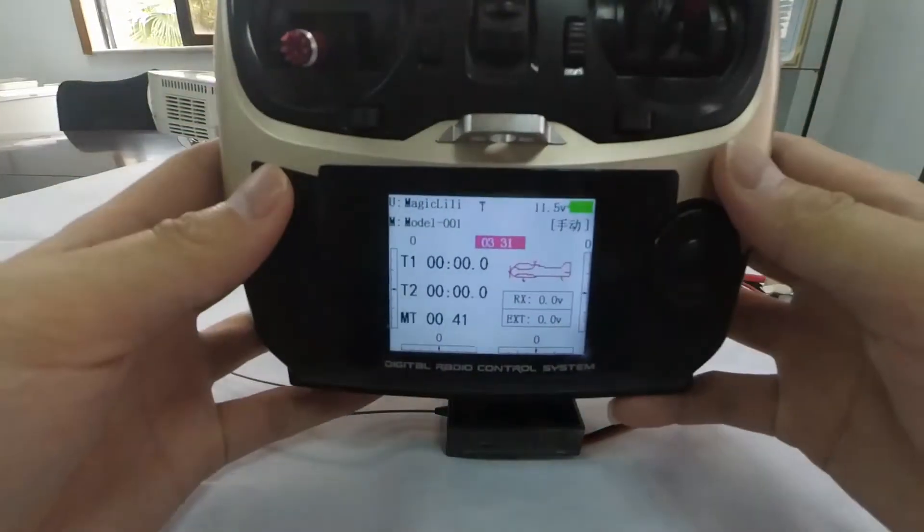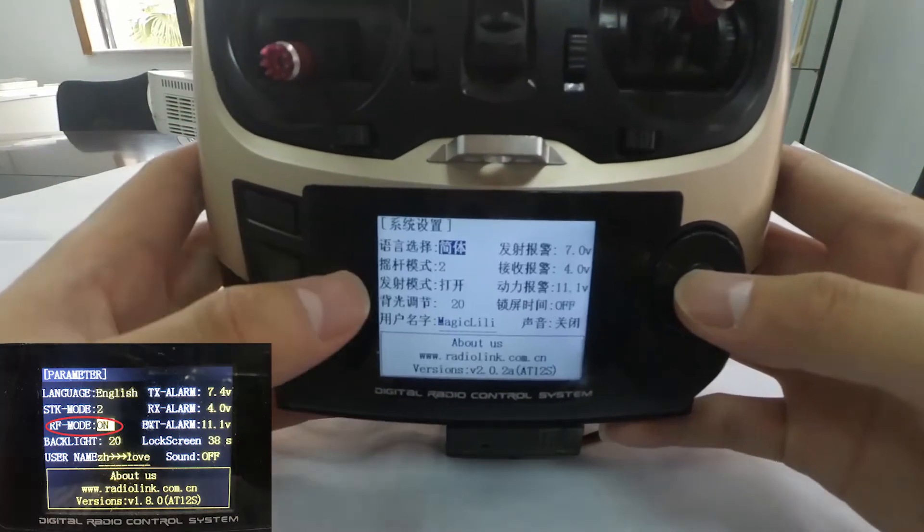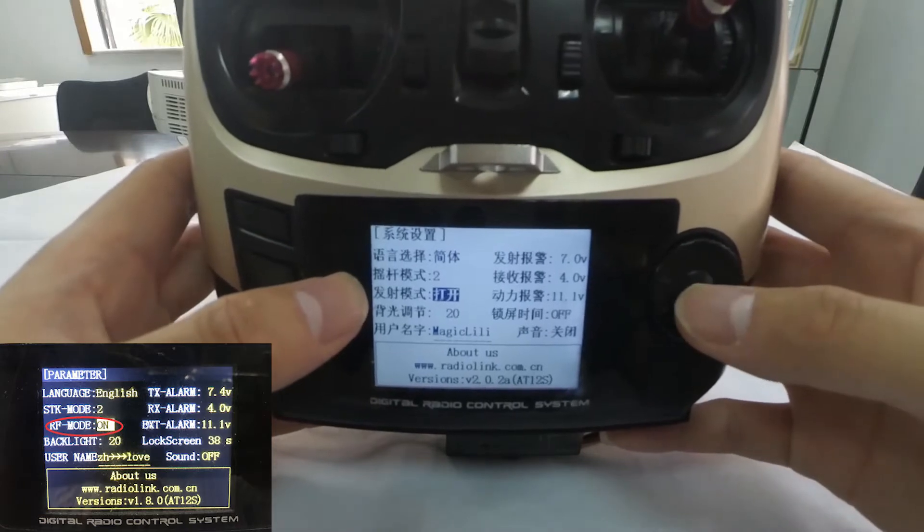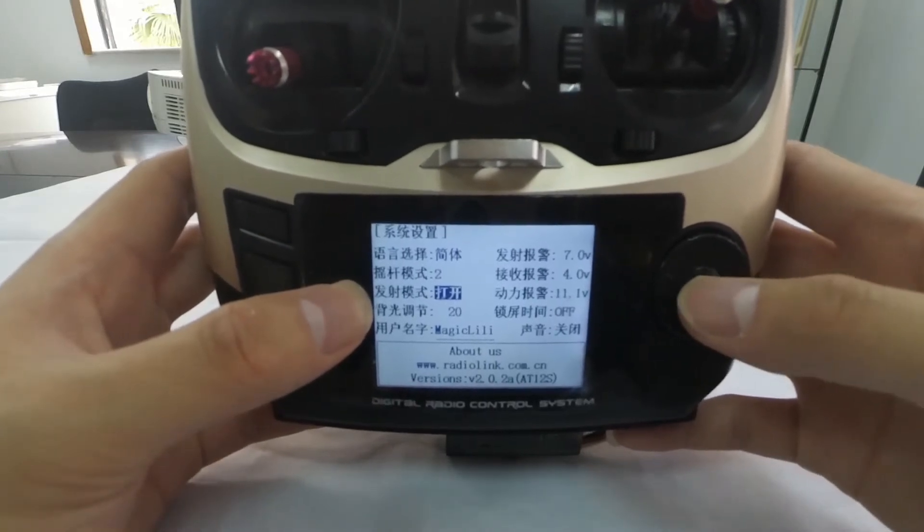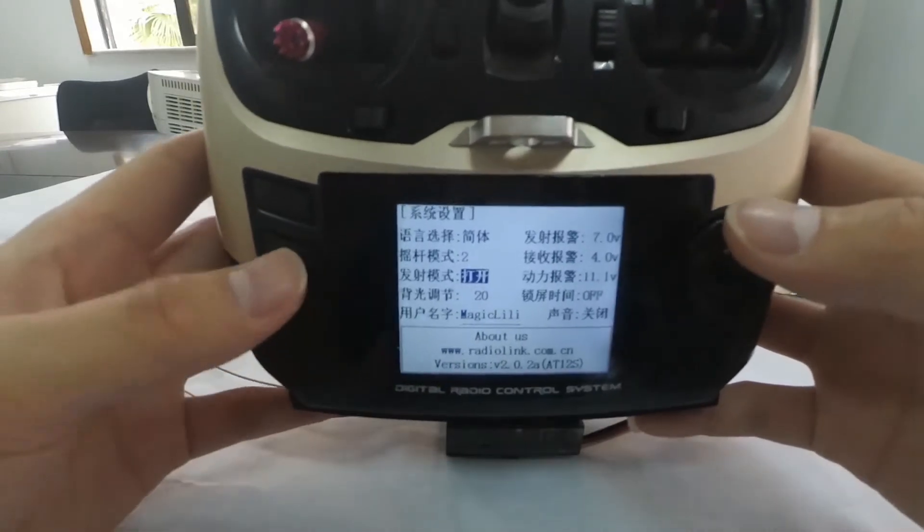If the green one is off, enter parameter menu and turn on the RF mode. Then the LED will be always on and the transmitter is ready to bind.